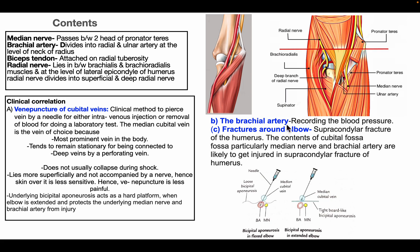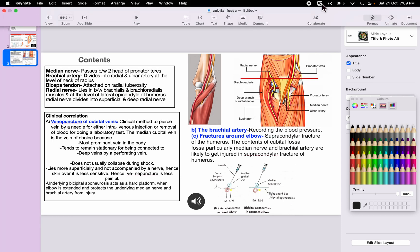The second clinical aspect is recording of the blood pressure. The third is fractures around the elbow joint, specifically supracondylar fracture of the humerus, where the contents of the cubital fossa — particularly the median nerve and the brachial artery — are likely to get injured.